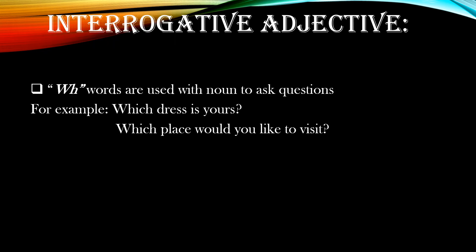Interrogative adjective — WH words are used with a noun to ask a question. Note the WH words, which include what, which, whose, and whom. For instance, 'which dress is yours?' — here which is used before the noun dress to ask a question. Another example: 'which place would you like to visit?' — place is a noun and the word which is used before it to ask a question.